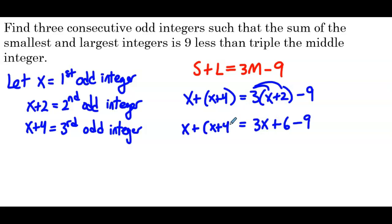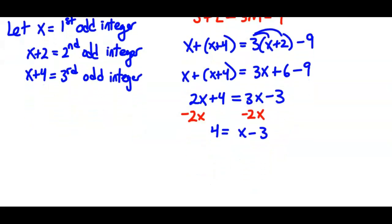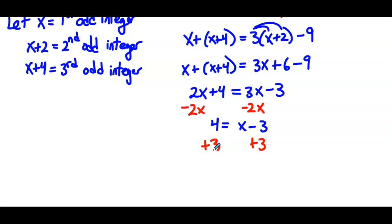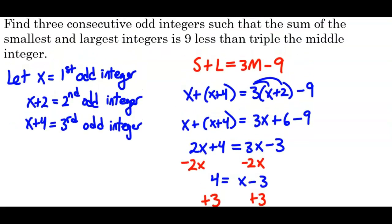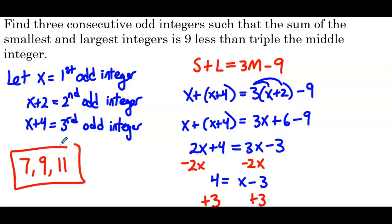Keeping the left side and combining like terms on both sides gives us 2x plus 4 equals 3x minus 3. Subtract 2x from both sides to get 4 equals x minus 3. Add 3 on both sides and we have 7 equals x. The problem asks for all 3 consecutive odd integers, so x is 7, the next odd integer is 9, and the next is 11. So 7, 9, and 11 are the 3 consecutive odd integers.